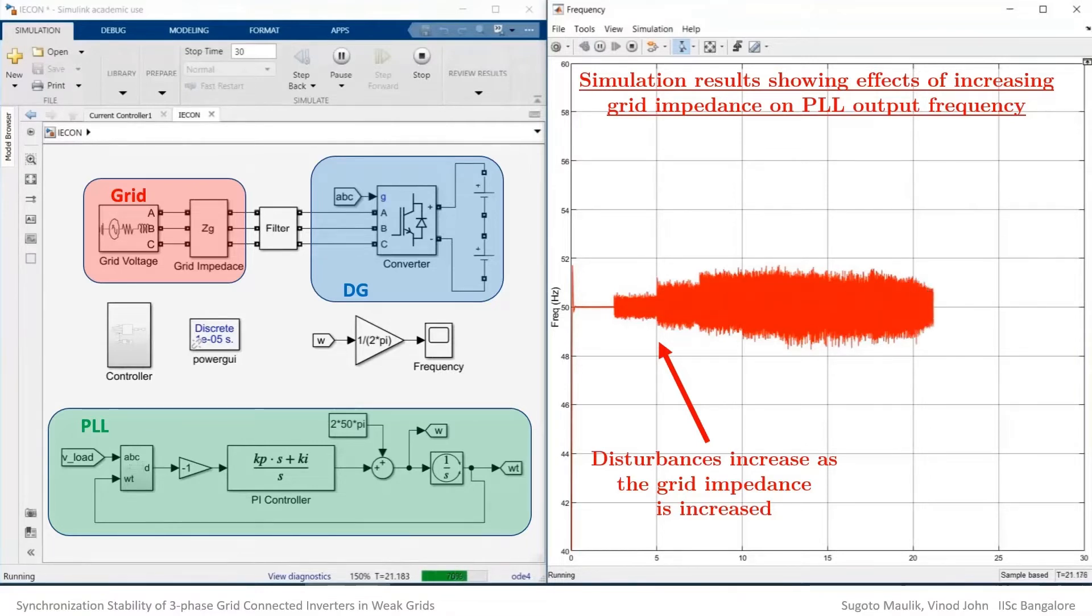Beyond a certain value of grid impedance, the PLL can be seen to lose stability and desynchronize from the grid.